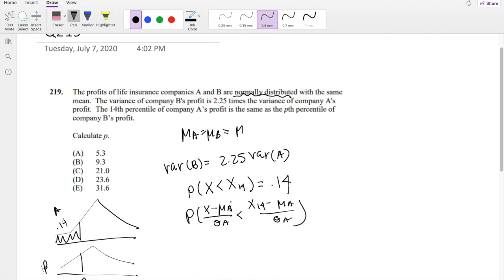Okay, so we know that this is just the definition of Z. Z is less than X of 14, whatever that may be, minus the mean, because we know mean of A is just mean, divided by the standard deviation of A is equal to 0.14.